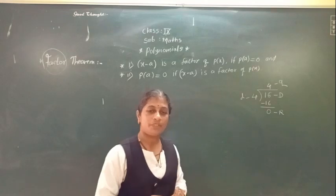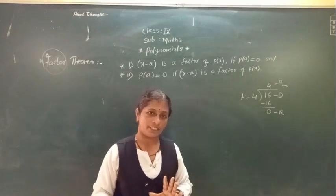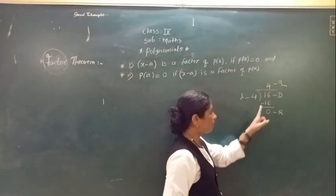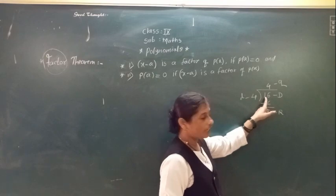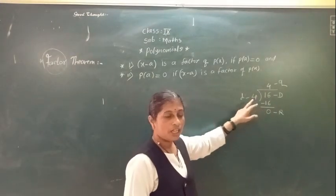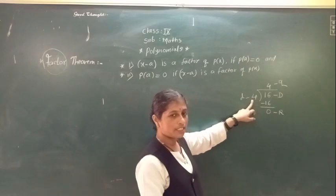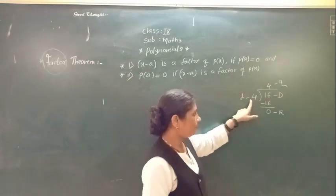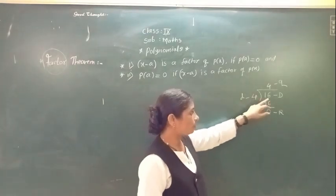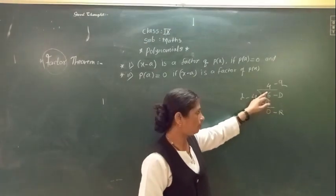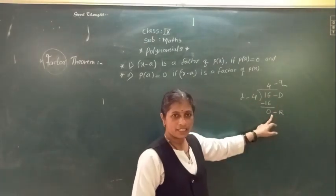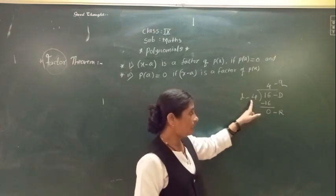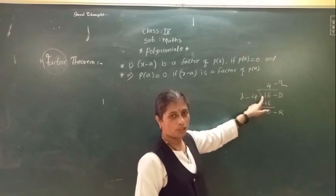So when you carry out such a type of division, if in any division you are getting the remainder as 0, then we can say this divisor is a factor of your dividend. This same concept we have to apply in the Factor Theorem.